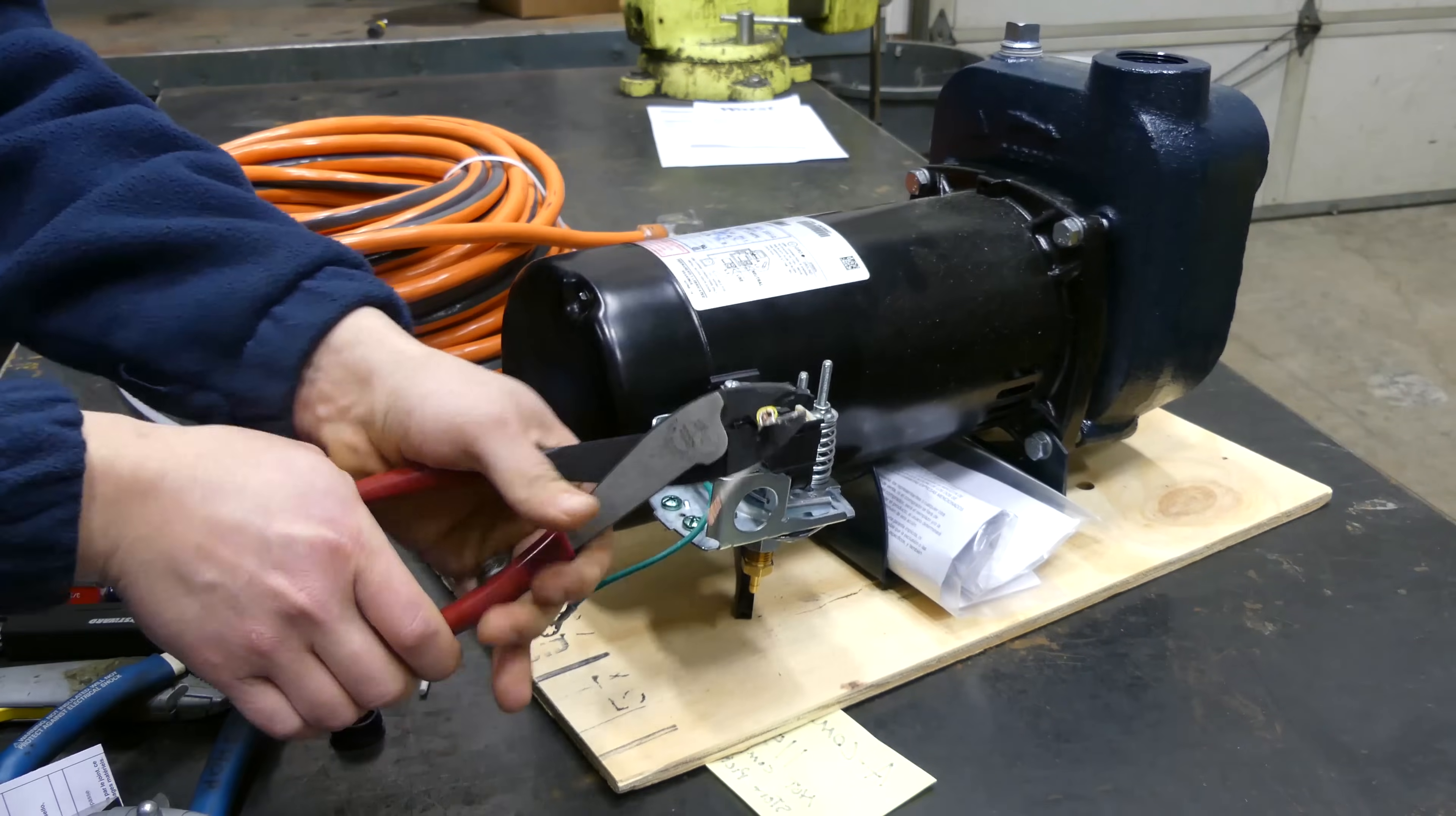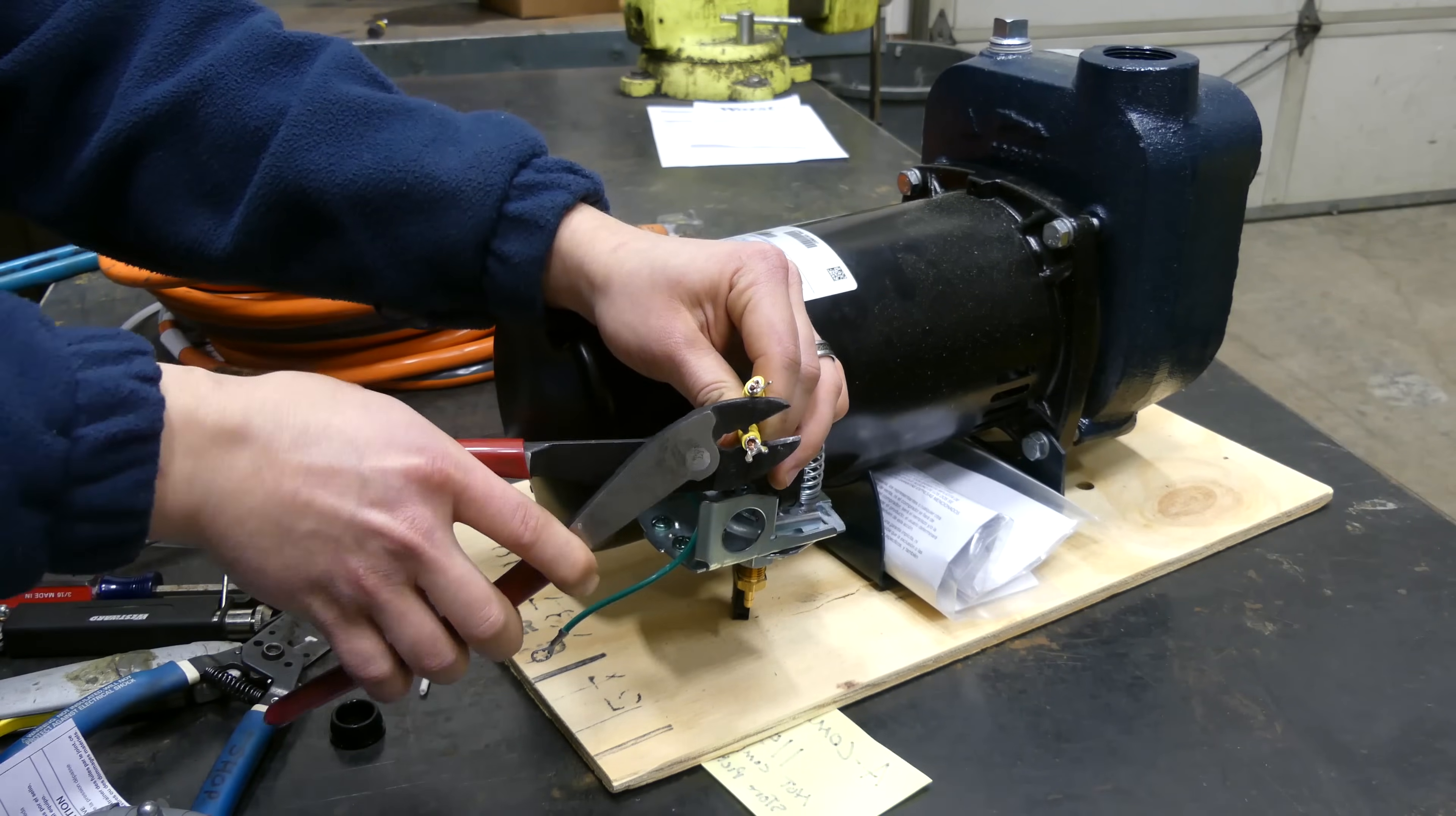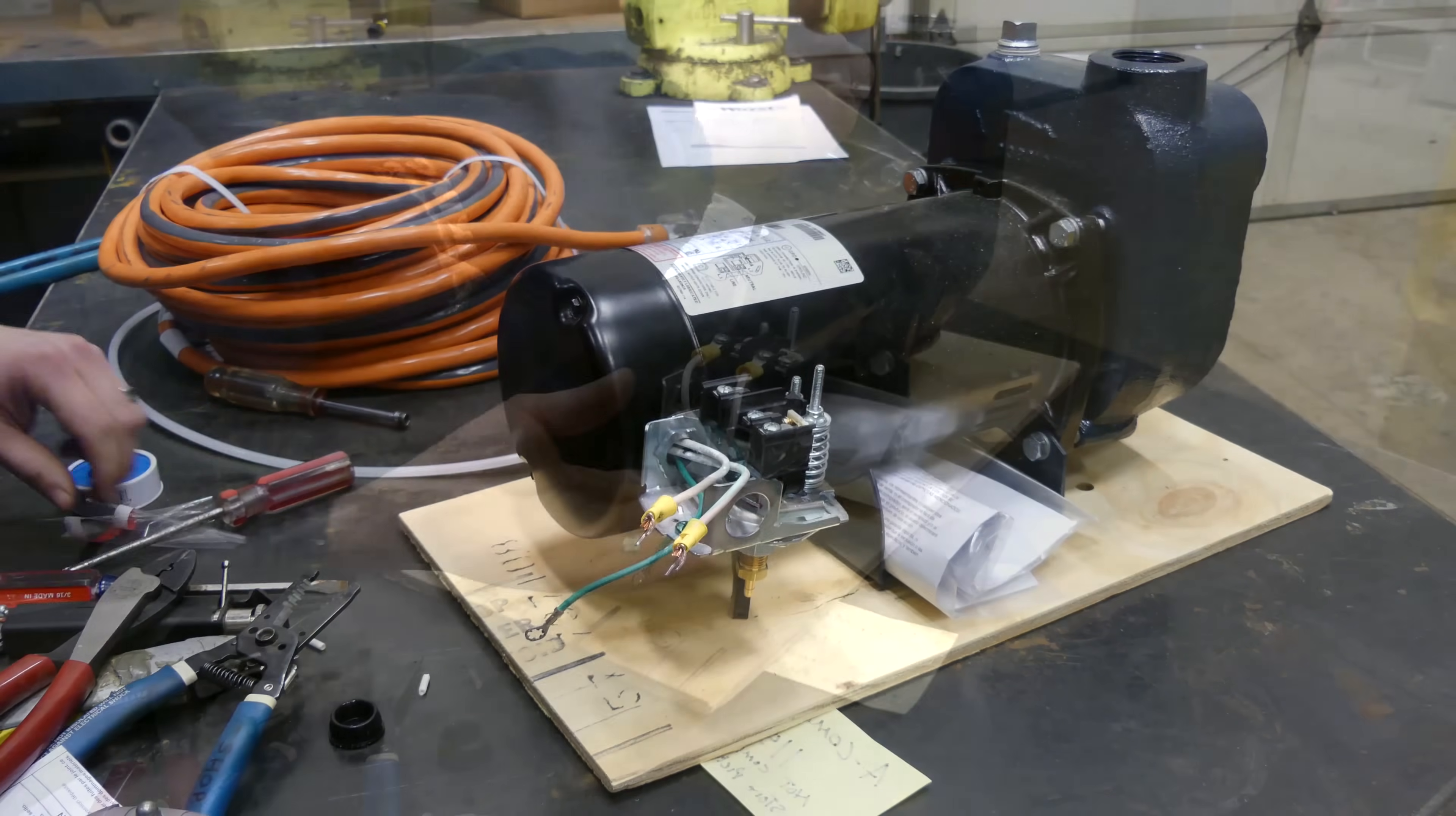That looks like it was right. And we've got our crimpers here. Lock this guy in. Crimp it down real good. Always make sure to check those. They don't pull off. We've got our next one going in. And that one's also nice and secure.